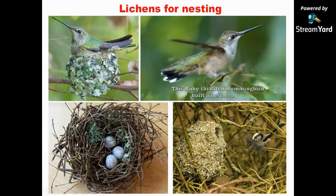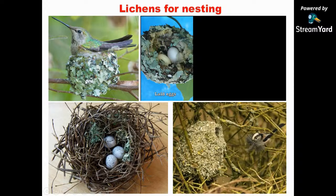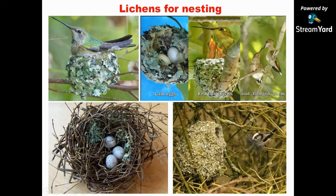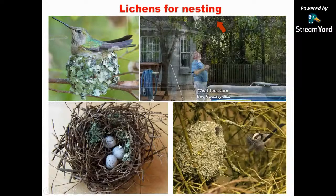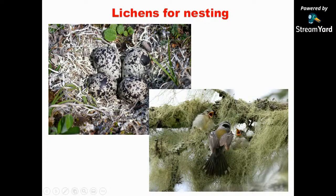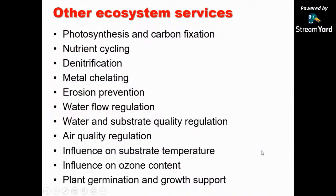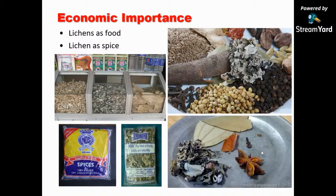Lichens also act as very good nesting material. You can see here a hummingbird has built its nest completely using lichens. Here again, a bird's nest is completely made up of lichens. Lichens can be used as a decorative cushion in nests, and eggs are laid among lichens as camouflage. The ecosystem services of lichens include photosynthesis and carbon fixation, nutrient cycling, denitrification, metal chelating, prevention of soil erosion, and regulation of air quality by absorbing and accumulating heavy metals.